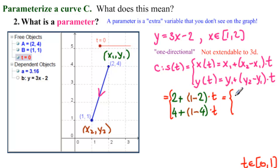And what do we get? We get two minus T and four minus three T. So writing in proper vector notation, we would have S of T equals two minus T, comma, four minus three T. And T is from zero to one.